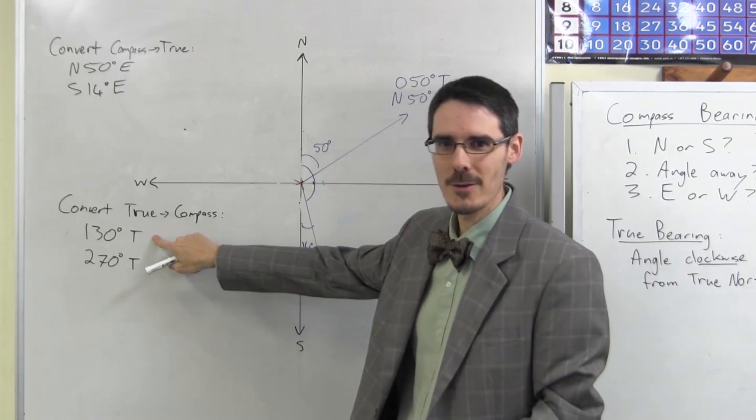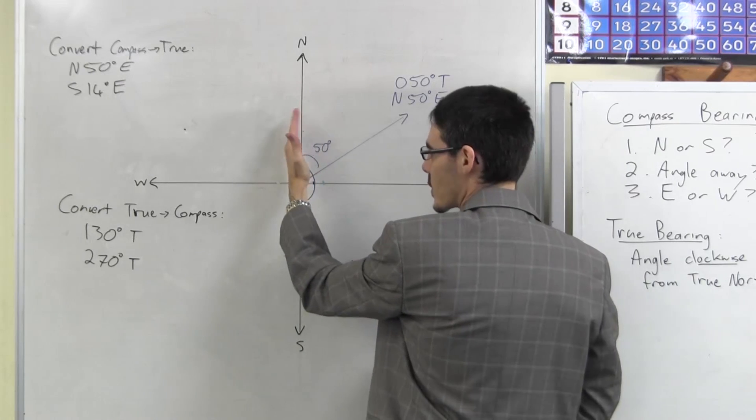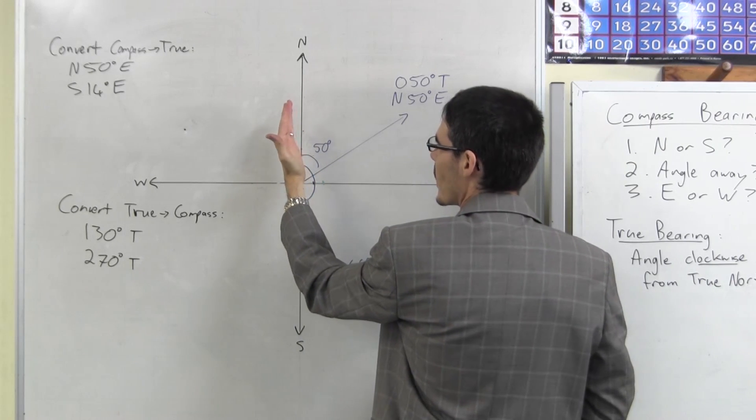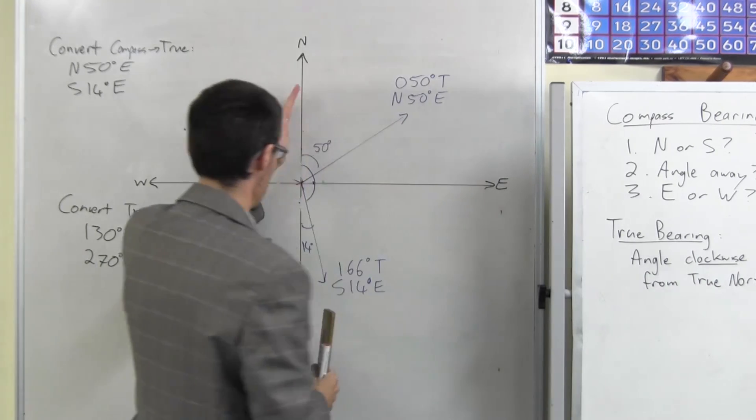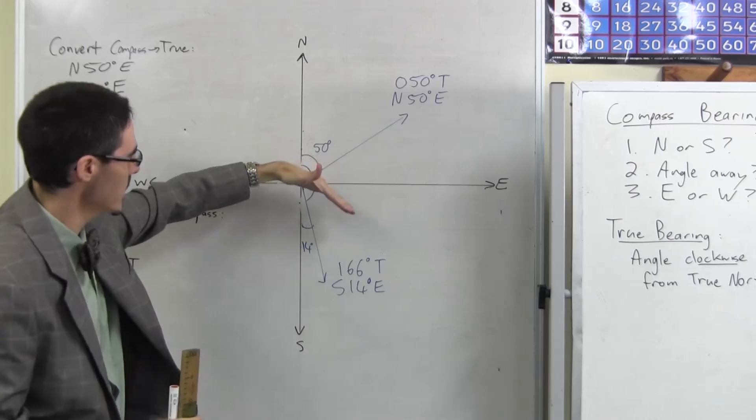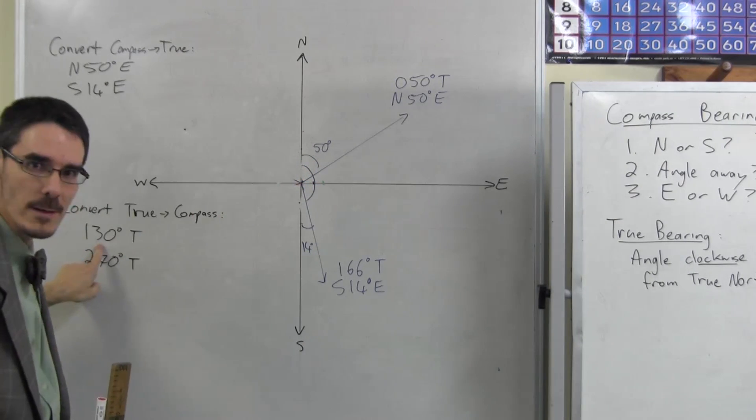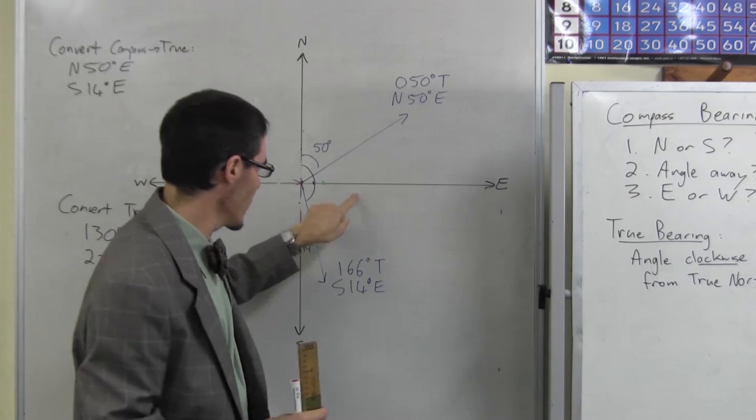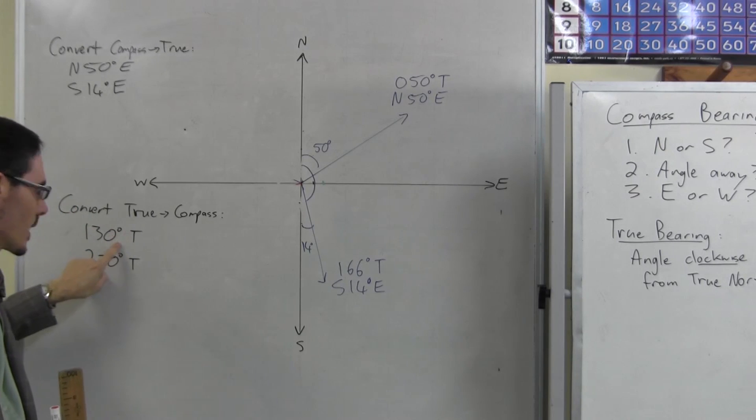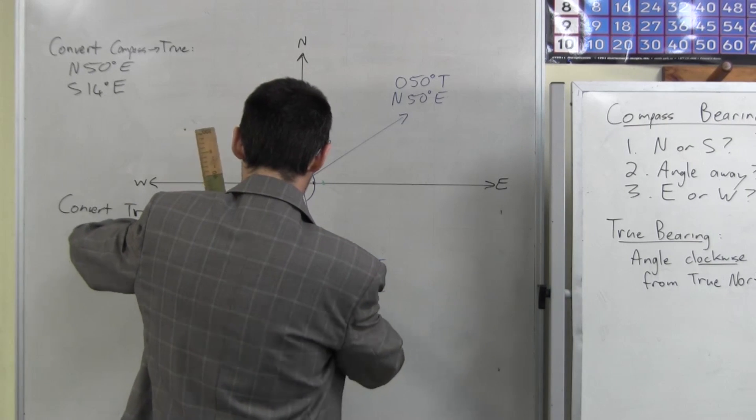130 degrees true. Well, north, true north is zero. As the angle increases, I go away clockwise. Zero degrees, 90 degrees, 180. Oops, too far. I need 130. Okay, go back. This is 90. How much more do I need from 90 to get 130? I need another 40 degrees. So it's going to be here.